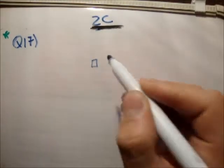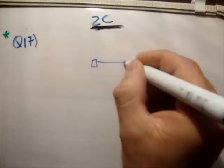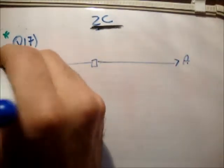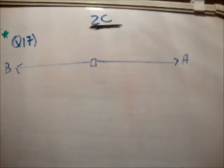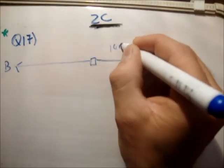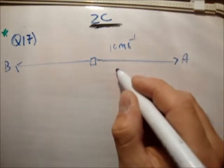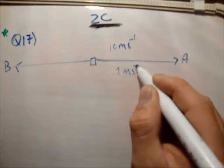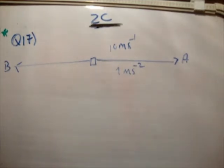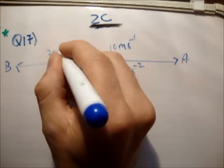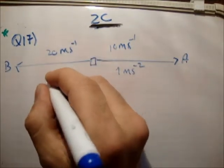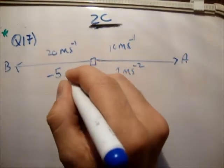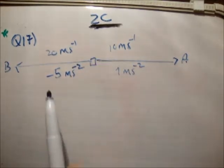So once again, I'm going to say that they start at this position here. Car A goes in this direction, car B goes in this direction, clearly because they are in opposite directions. Car A has a speed of 10 meters per second and an acceleration of 1 meter per second squared. Car B is traveling at 20 meters per second and decelerating at minus 5 meters per second squared.